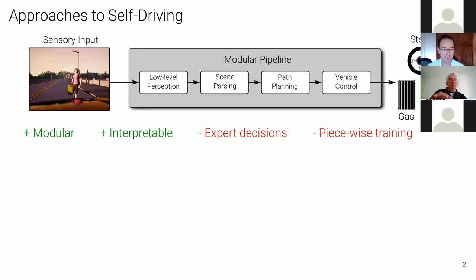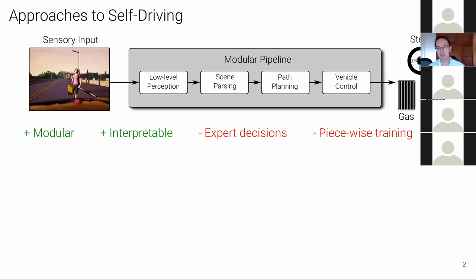What are the typical approaches to self-driving? There are two dominating paradigms. The first is what I call a modular pipeline, where you have a sensory input signal — say a camera, or multiple sensors like LIDAR — and then a pipeline of processing modules: low-level perception, scene parsing, path planning, vehicle control, and possibly more. This processes step-by-step the high-dimensional signal, compressing it down to very low-dimensional steering and braking commands. This is the dominating approach in industry, where large teams split into teams for individual modules.